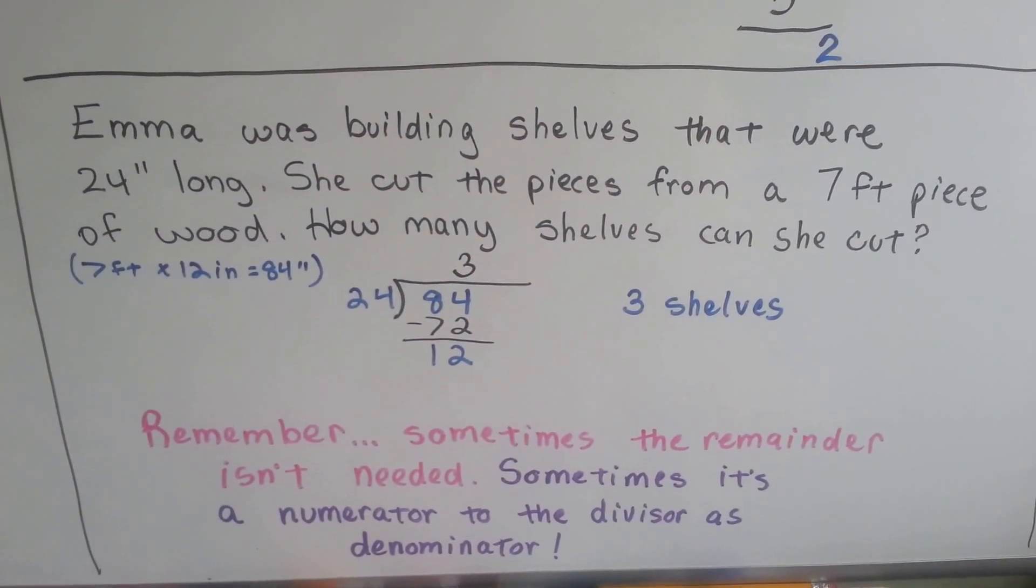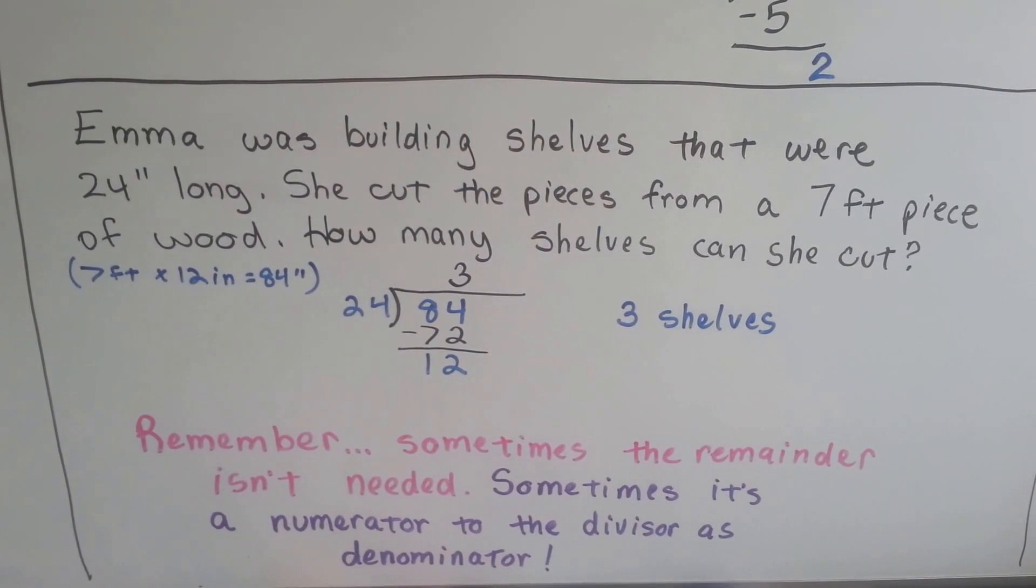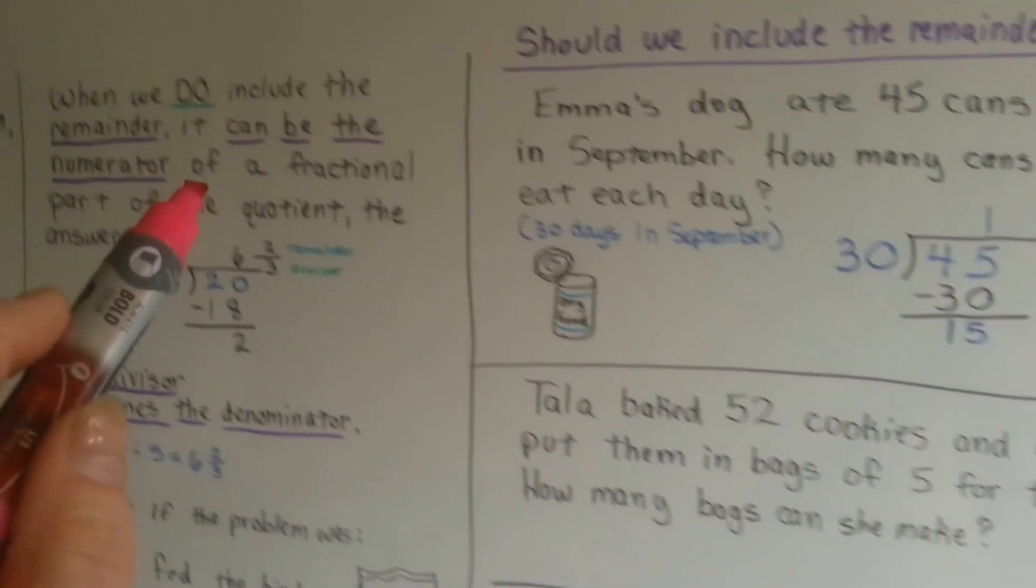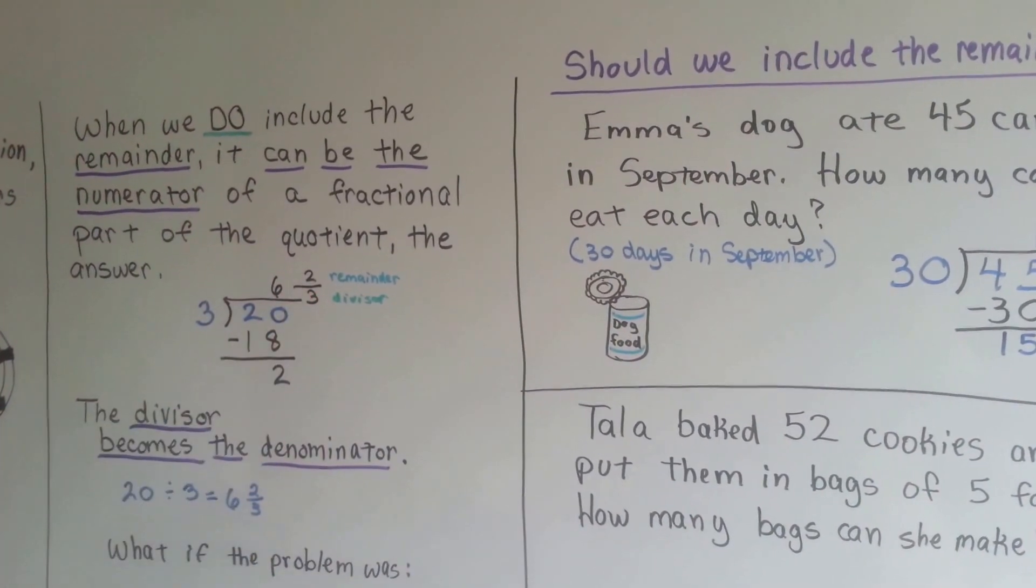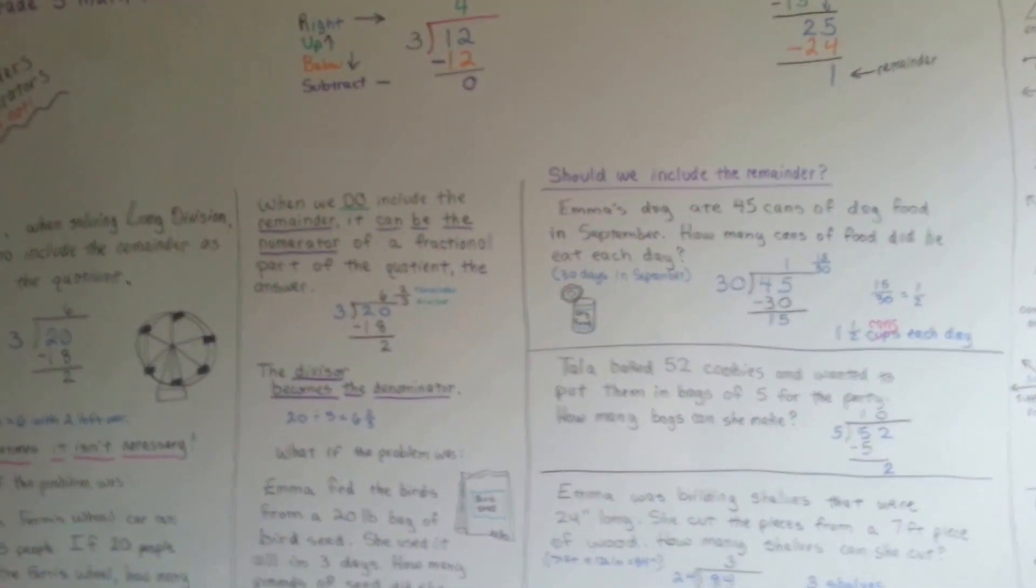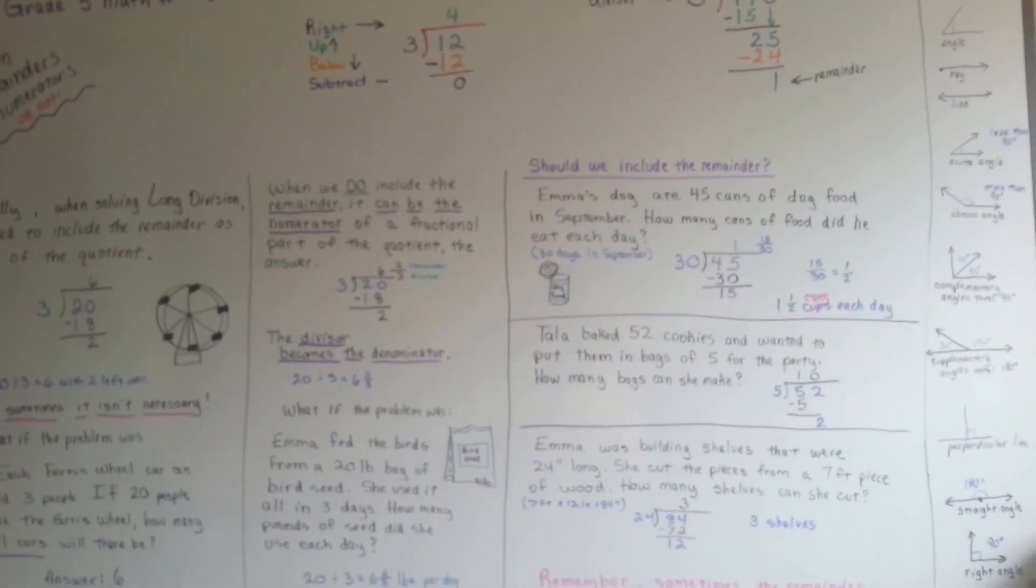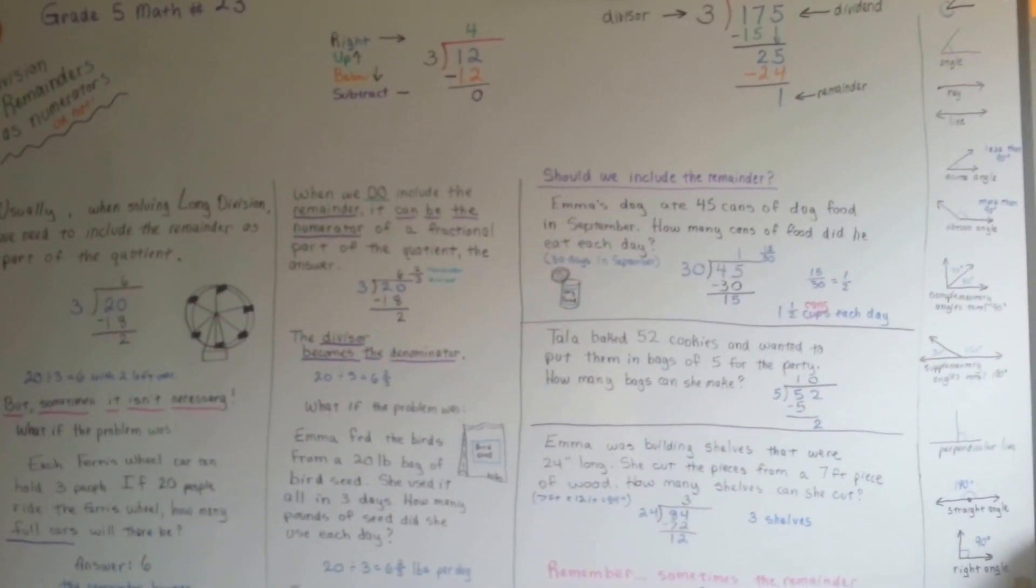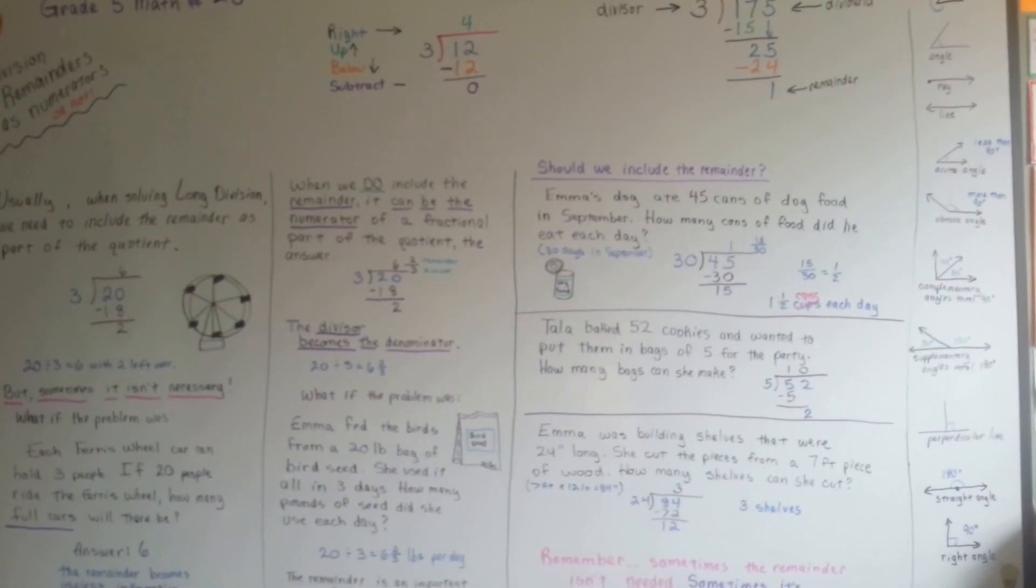So remember, sometimes the remainder isn't needed in a problem. Sometimes it's not important. But sometimes it's a numerator to the divisor as a denominator. Sometimes we need to count it as the numerator and use the divisor as the denominator. It's up to you to figure out if that numerator and denominator, that remainder and divisor, are important. It's up to you to determine if it's important information or if it's useless information. I hope this helped. I hope this helped you figure this out. And I'll see you next video. Bye!